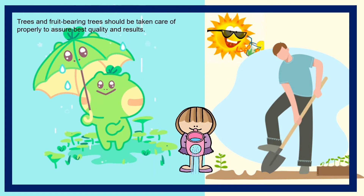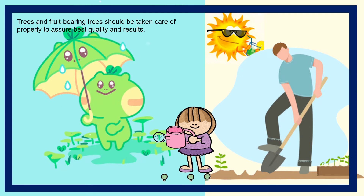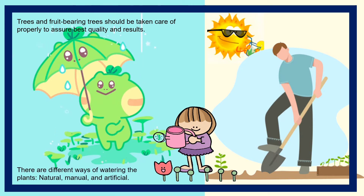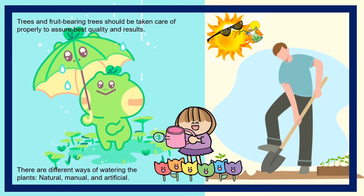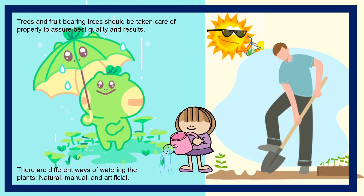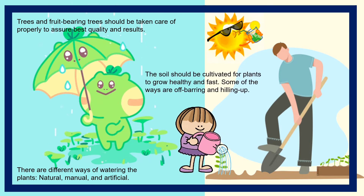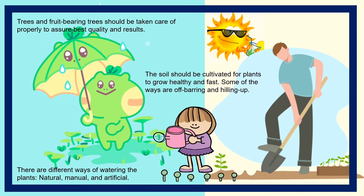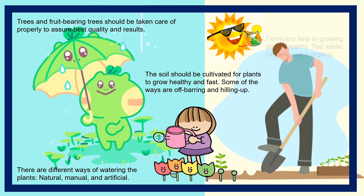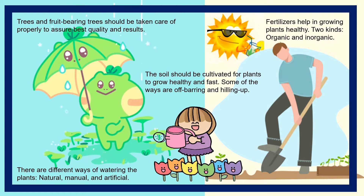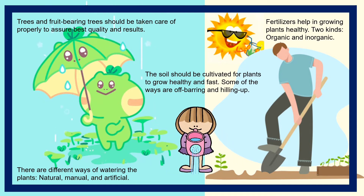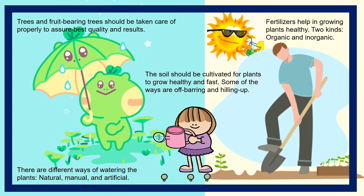Trees and fruit-bearing trees should be taken care of properly to assure best quality and results. There are different ways of watering plants — natural, manual, and artificial. The soil should be cultivated for plants to grow healthy and fast; some ways are off-bearing and hilling up. Fertilizers help in growing plants healthy, and there are two kinds: organic and inorganic.